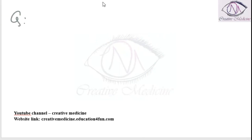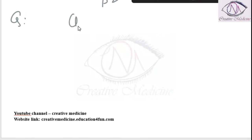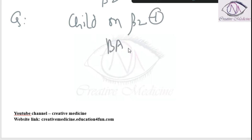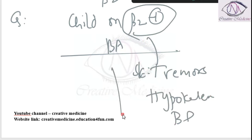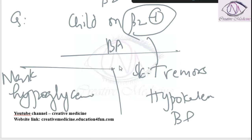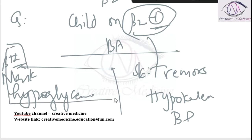A child given a beta-2 agonist for the treatment of bronchial asthma exhibits all of the following features except: side effects of beta-2 agonists include tremors, hypokalemia, and bronchodilation. Beta blockers — not beta-2 agonists — will mask the symptoms of hypoglycemia.